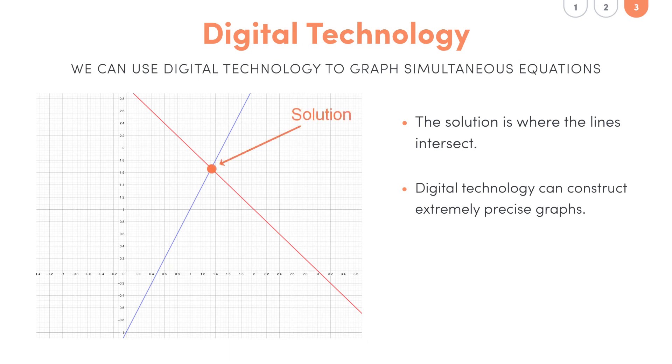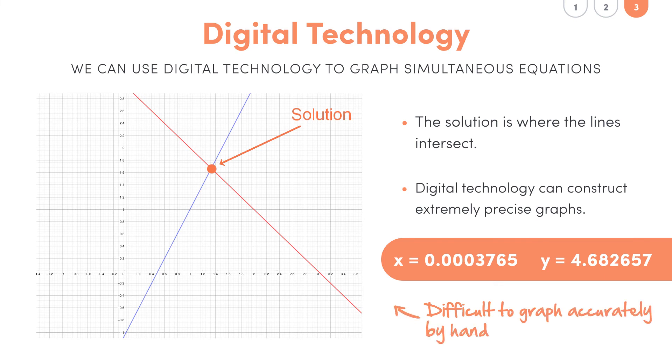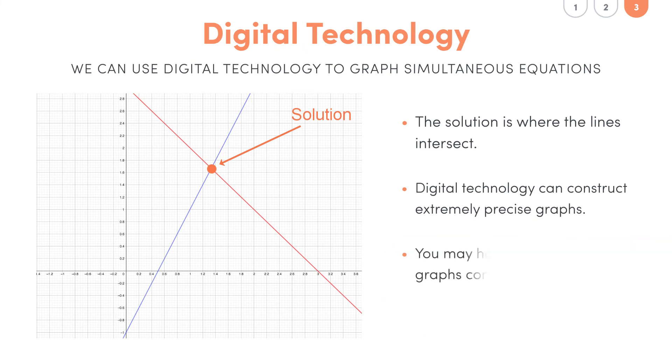This is useful if, say for example, the solution to an equation was something crazy like x equals 0.0003765 and y equals 4.682657, because I don't know about you but I'd struggle to get an answer that accurate off a graph that I'd drawn. In saying this, in a HSC exam you wouldn't have to construct a graph of simultaneous equations digitally, you just have to interpret and read an answer of one already given to you, so this makes things so much easier for you.